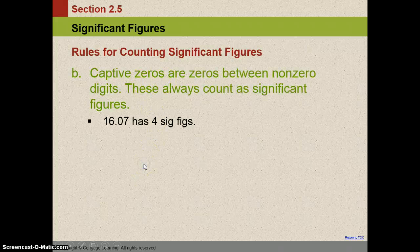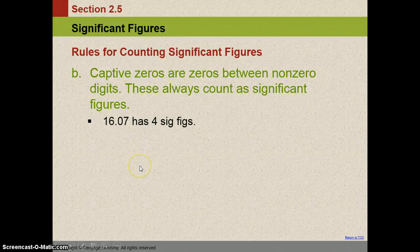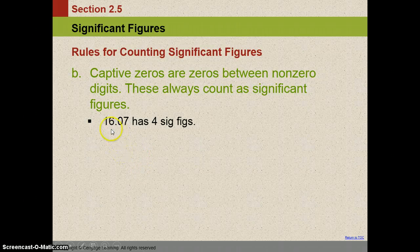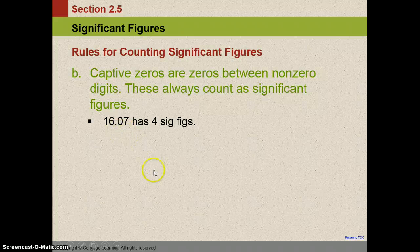Captive zeros, I don't call them captive. I call them trapped. So trapped zeros are between two non-zero digits and these are always significant. So in 16.07, the zero is significant because it's trapped between two non-zero numbers.